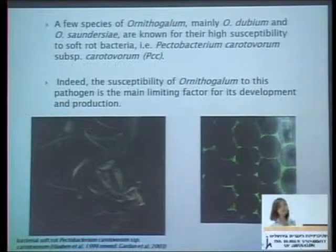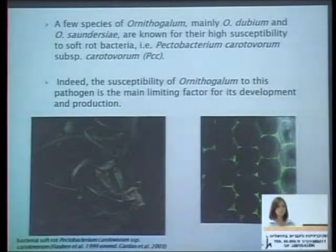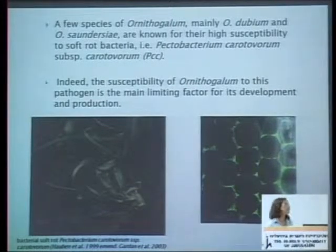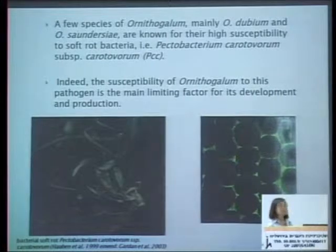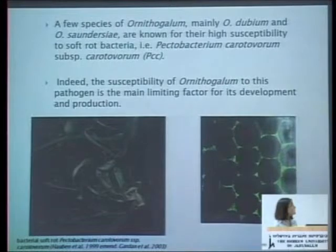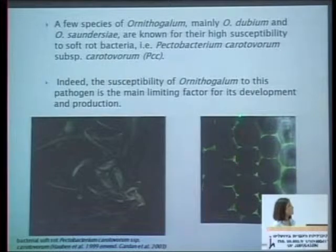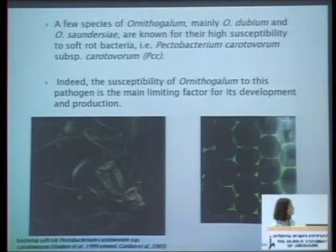A few species of Ornithogalum are known for their susceptibility to the soilborne bacterium Pectobacterium carotovorum. This bacteria produces pectolytic enzymes that cause the softening of the tissue and eventually its complete maceration. The susceptibility of Ornithogalum to this pathogen is the main limiting factor for its development and production. This pathogen enters mainly through stomata or wounds, and we can see colonization in the intercellular spaces and complete maceration of the chloroplasts, and here we can see a completely macerated bulb.